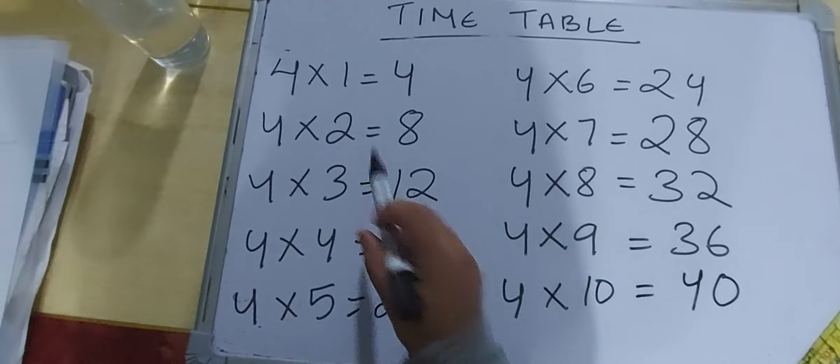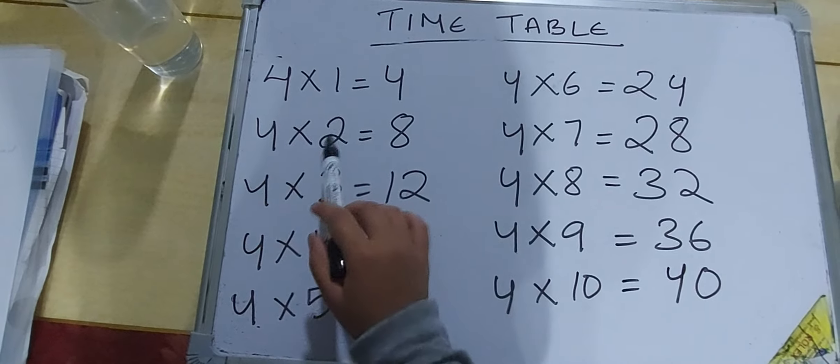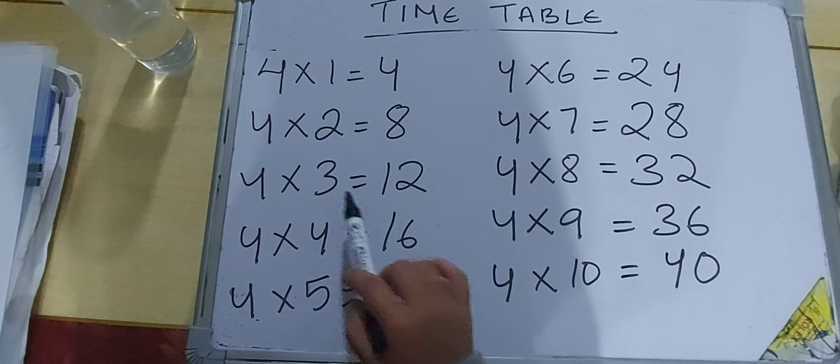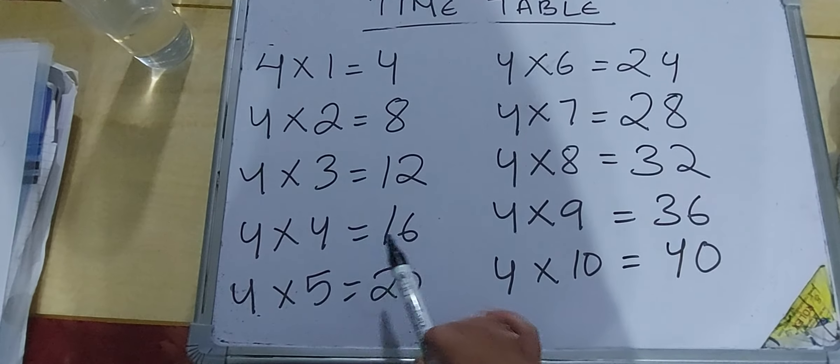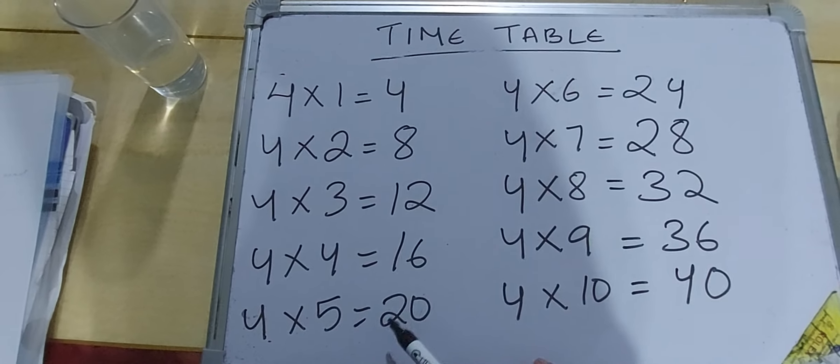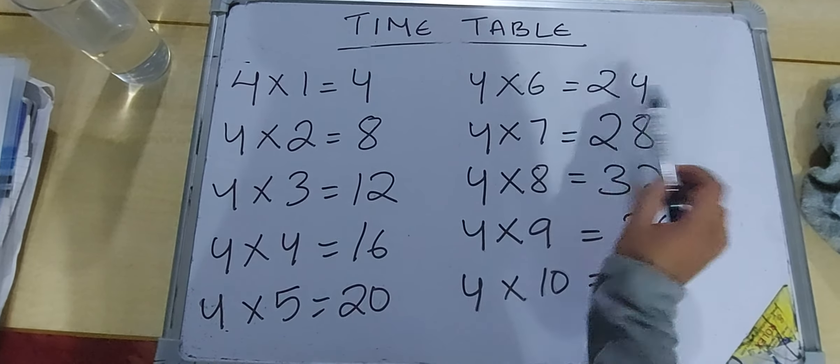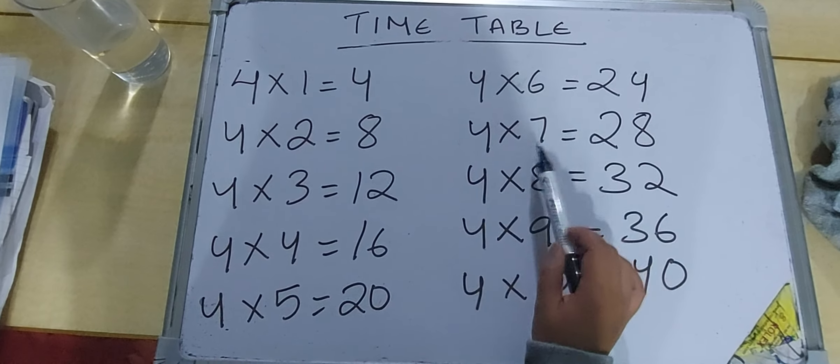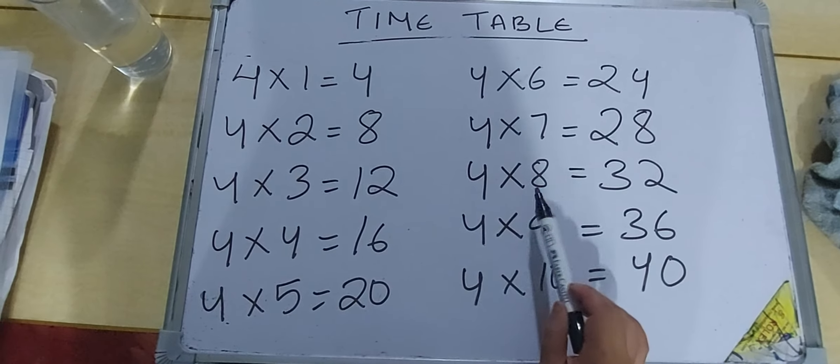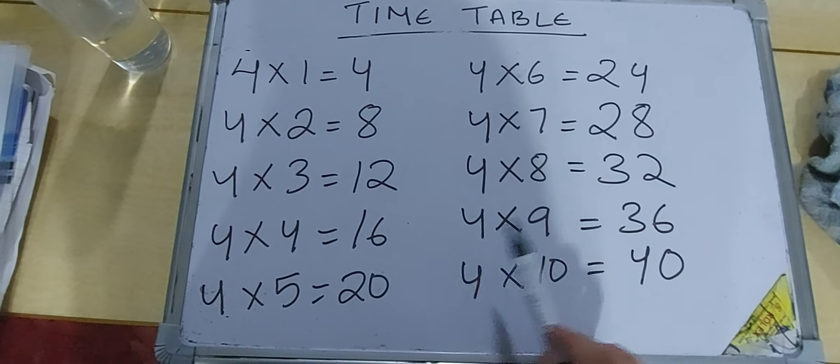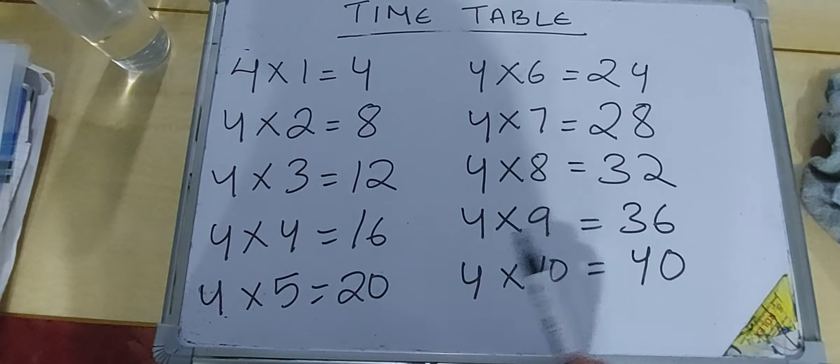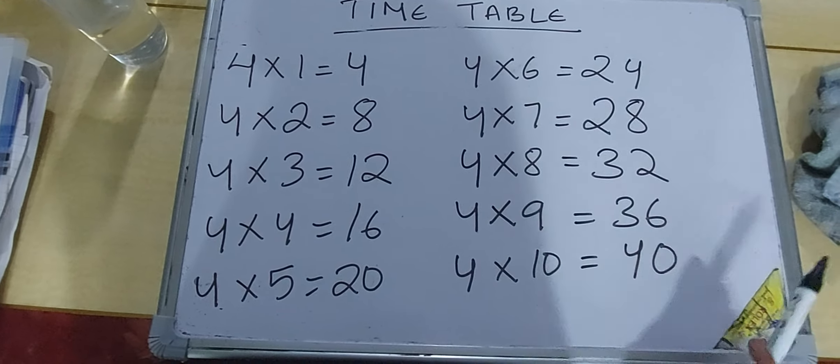Let's read again. Four one is four. Four twos are eight. Four threes are twelve. Four fours are sixteen. Four fives are twenty. Four sixes are twenty-four. Four sevens are twenty-eight. Four eights are thirty-two. Four nines are thirty-six. Four tens are forty.